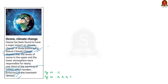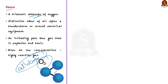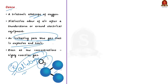First of all, what is ozone? Ozone, that is O3, is a triatomic allotrope of oxygen — a form of oxygen in which the molecule contains three atoms instead of two as in the common form. Ozone is an irritating pale blue gas that is explosive and toxic even at low concentrations. So it is a highly reactive gas. Ozone is both a natural and man-made product.